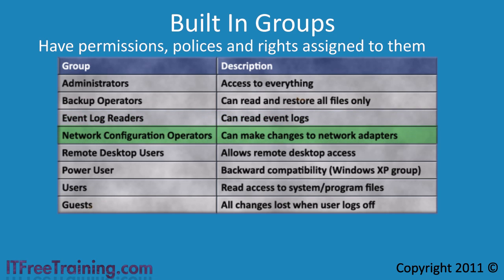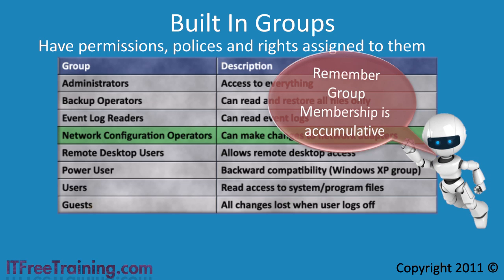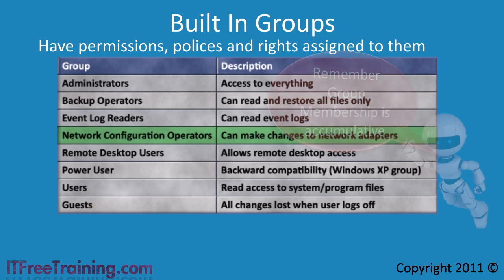The next group is network configuration operators. Members of this group can make changes to network adapters and network connections. Group membership is accumulative — a general user does not have access to change network adapters, but if you want to give them this ability, simply add their username to the network configuration operators group. To give all users on the system this ability, add the users group to the network configuration operators group, providing an easy solution to giving users more access without making them administrators.